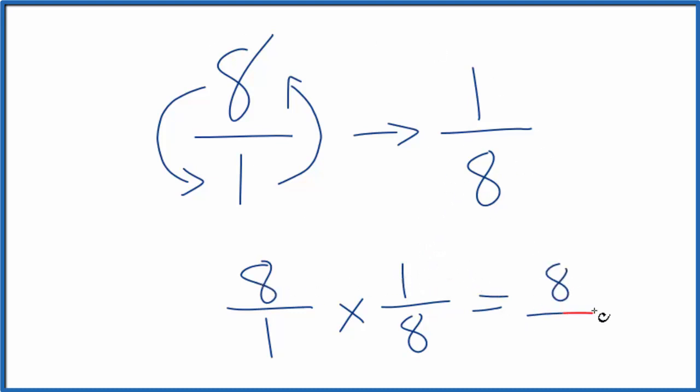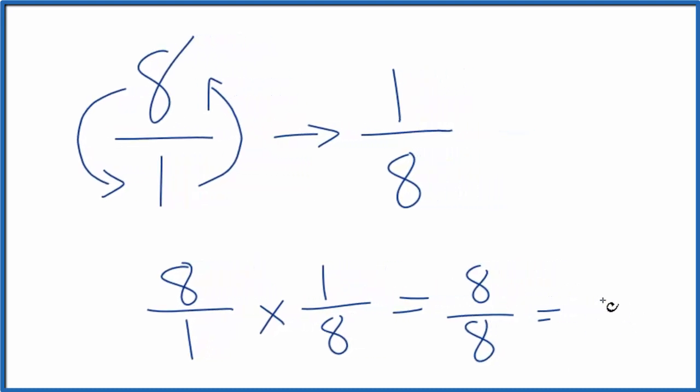8 times 1 is 8. 1 times 8 is 8. And if you divide 8 by 8, you get 1. So we did the first part correctly. The reciprocal for 8 is one-eighth.